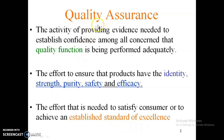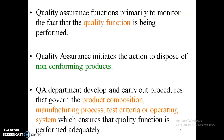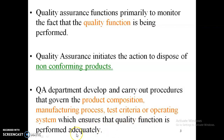The main functions of QA in any pharmaceutical organization are documentation and validation, to carry out self-inspection checks, and to perform quality audits. QA functions primarily to monitor that quality function is being performed. Quality assurance initiates action to dispose of non-conforming products. QA departments develop and carry out procedures that govern product composition, manufacturing process, test criteria, and operating systems to ensure quality function is performed adequately.